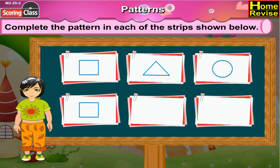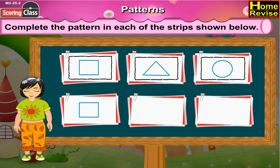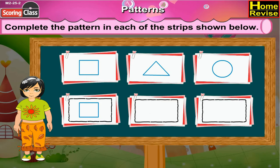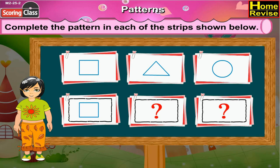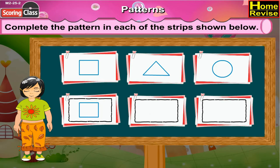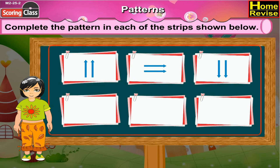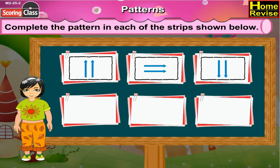Now the next pattern strip. In the first three boxes of the pattern strip we see a square, triangle, and circle. In the next three boxes, the first box is filled with the square and the last two are empty. In the second box we will draw a triangle, and in the third box we will draw a circle.